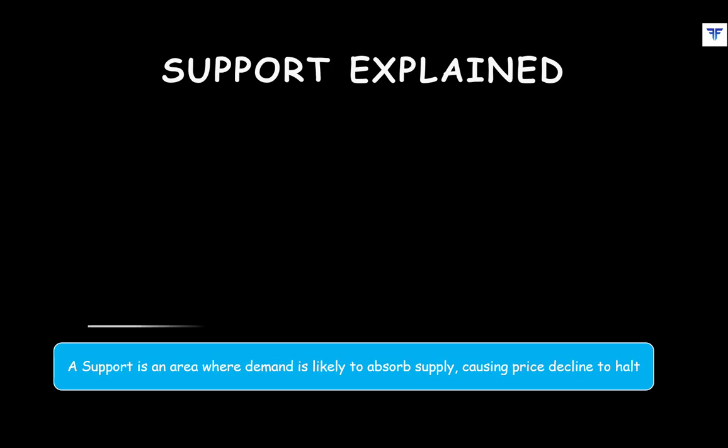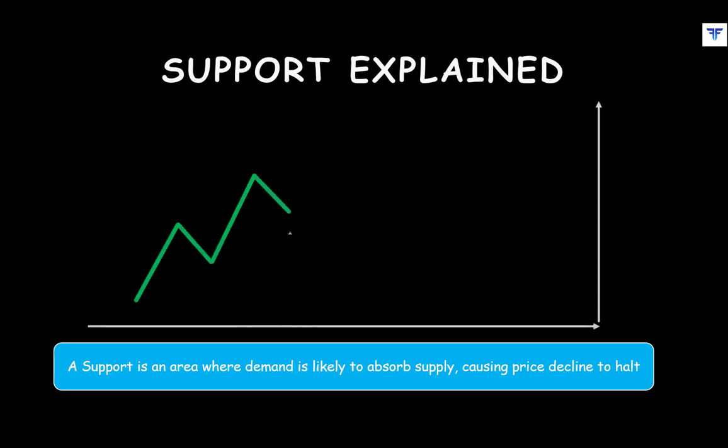Let us understand this using the chart here. In this chart, from point 1, notice that price rallied till point 2, from where it started falling. This decline from point 2 ended at point 3, before price started climbing again.